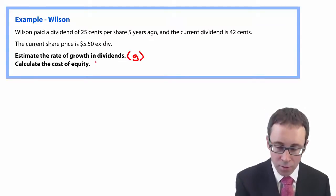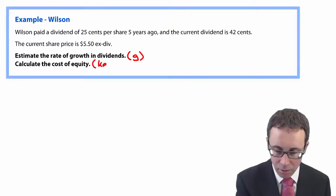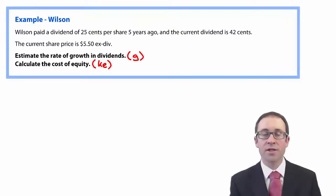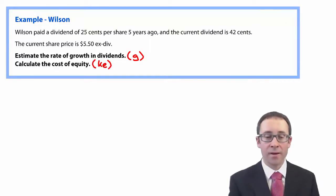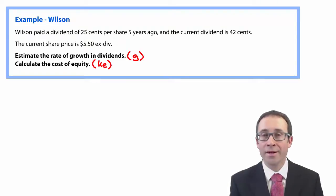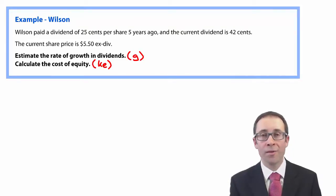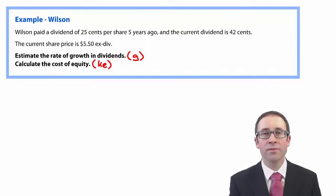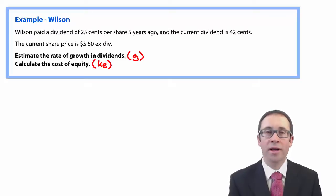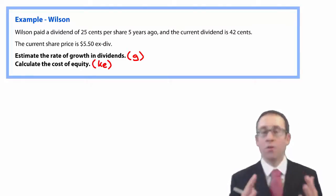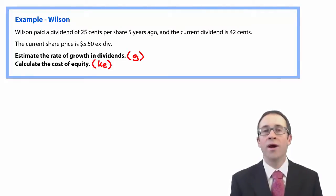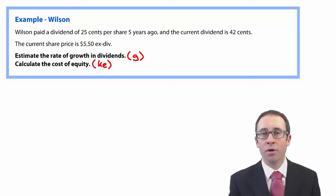Then it wants us to work out the cost of equity, KE. When looking at the growth rate, the question may tell you specifically how to calculate it, or you may have to deduce it from the information given. Here, we know we have to use the historic growth rate as that's the only method we've covered, but there could be more than one way in the exam.